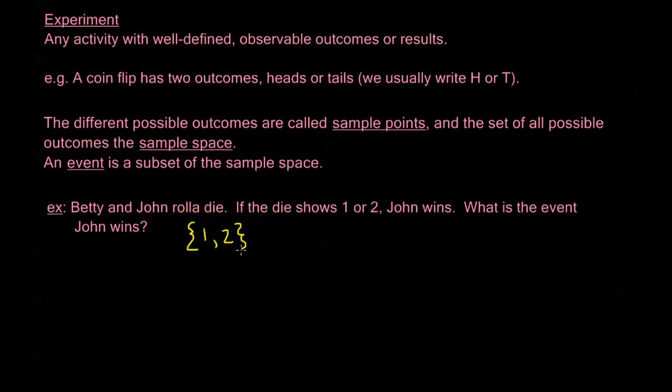Pretty basic, right? So the sample space here is {1, 2, 3, 4, 5, 6}. The set {1, 2} is a subset of the sample space and this subset of the sample space represents the event in which John wins this dice game, this very basic dice game between him and Betty.